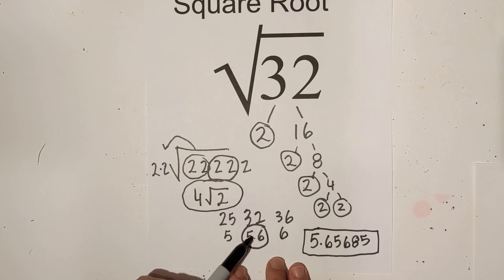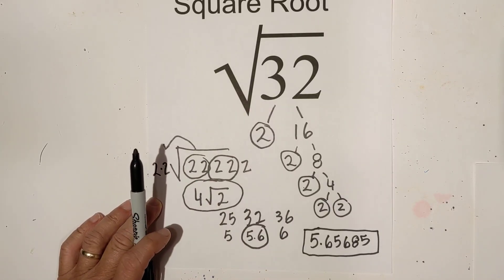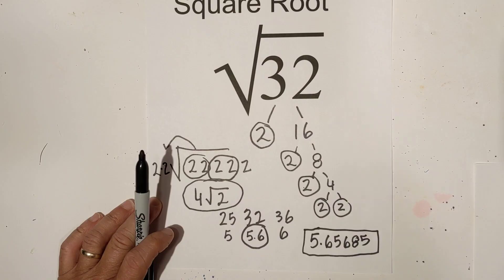You can estimate it's about halfway in between, around 5.6. And here it is in decimal form. I hope that helps. And remember, kindness multiplies kindness. Be kind to someone today. Thank you.